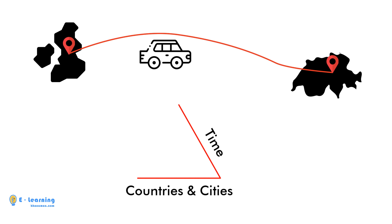The third and most important factor is money. You need to calculate how much money you are going to spend in each country and city, and also the total cost of your trip. The last factor is whether you are supposed to use highways or not. All of these factors together show the quality of your plan and the quality of your trip.